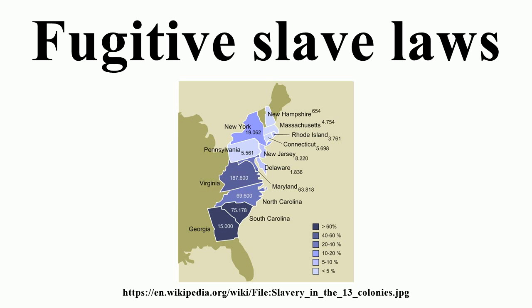It is also agreed that if any servant run away from his master into any other of these confederated jurisdictions, that in such case, upon the certificate of one magistrate in the jurisdiction out of which the said servant fled, or upon other due proof, the said servant shall be delivered, either to his master, or any other that pursues and brings such certificate or proof.